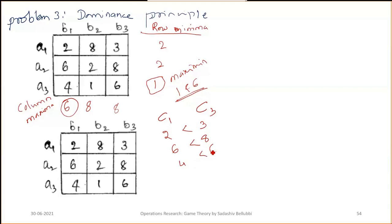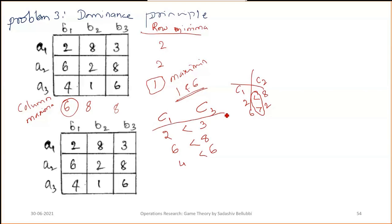When comparing C1 and C2: 2 is less than 8 but 6 is greater than 2 — two different symbols, so discard that comparison. But comparing C1 and C3, all elements of C3 are greater than C1, so C3 is dominating.